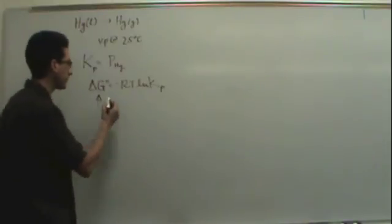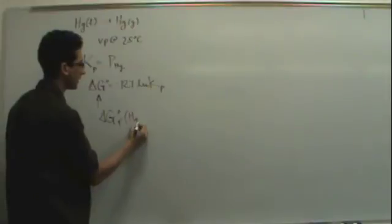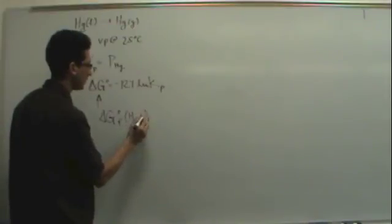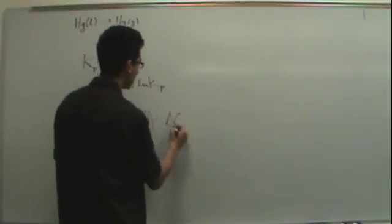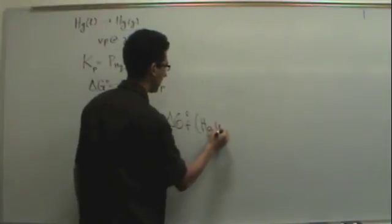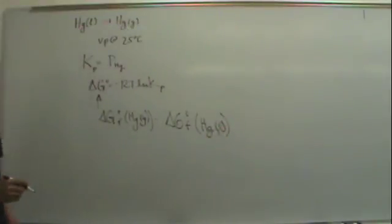So I would just, kind of how you did the previous problem, I would go delta G of formation of the mercury liquid. No, that's the, I need the products first. Yeah. Gas minus delta G of the formation of mercury. Let's see, and the reactants were a liquid.